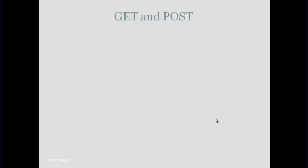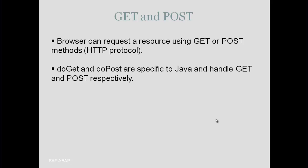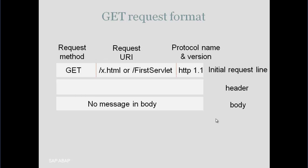We have two methods, GET and POST, which are very popular and the difference between them is usually asked in interviews. A browser can send a request to a resource using either GET or POST method — this applies whether you are working with PHP, .NET, or any other framework. In Java, we have two methods called doGet and doPost to handle GET and POST requests respectively.